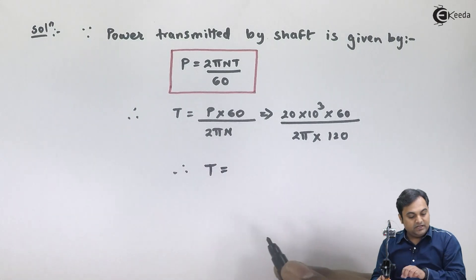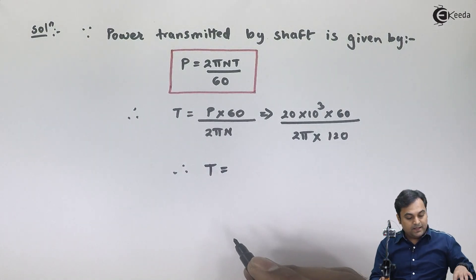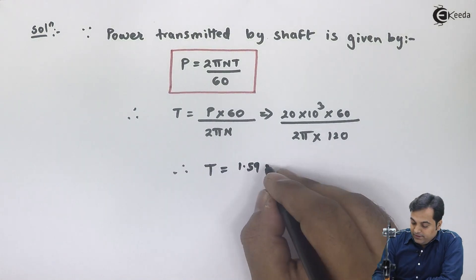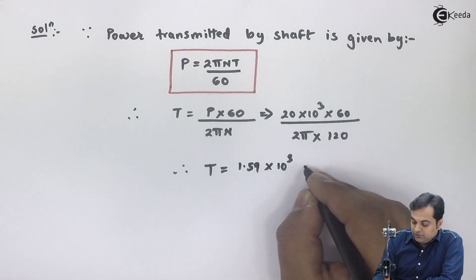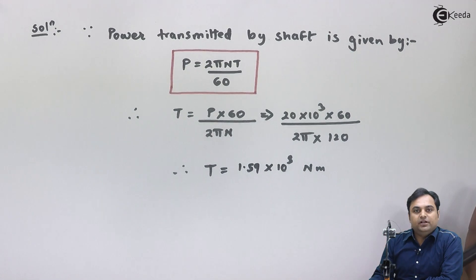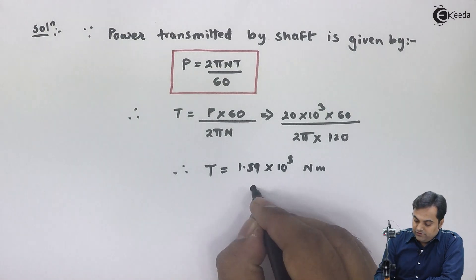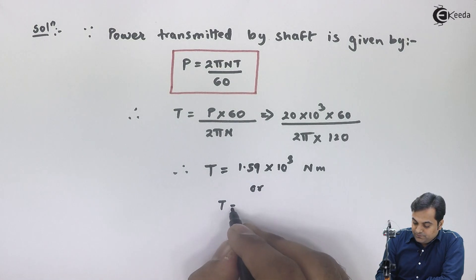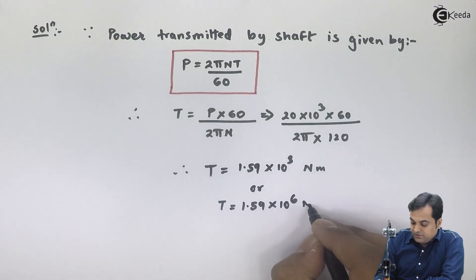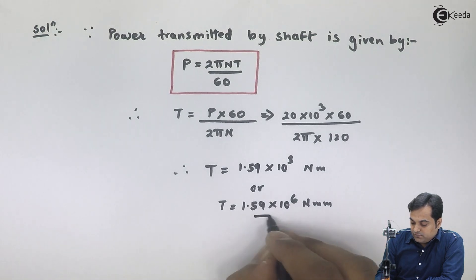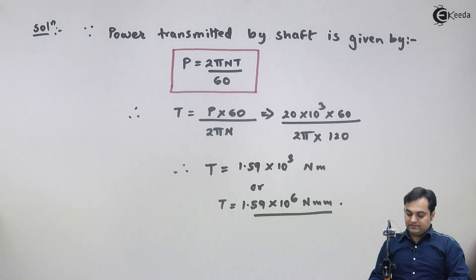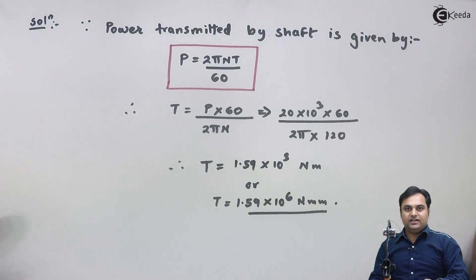Therefore, torque T = 1.59 × 10³ N·m. Converting to N·mm by multiplying by 1000, this becomes 1.59 × 10⁶ N·mm. This is the value of torque. Now let us write the strength criteria.